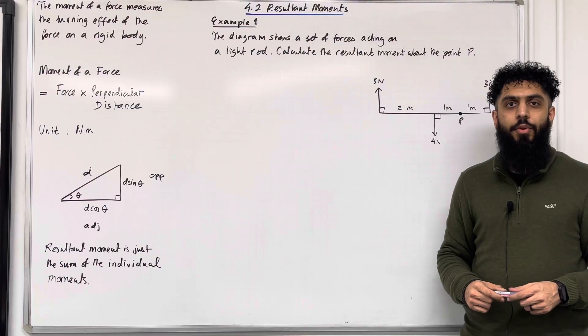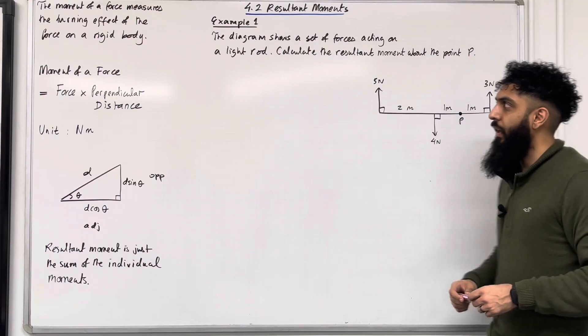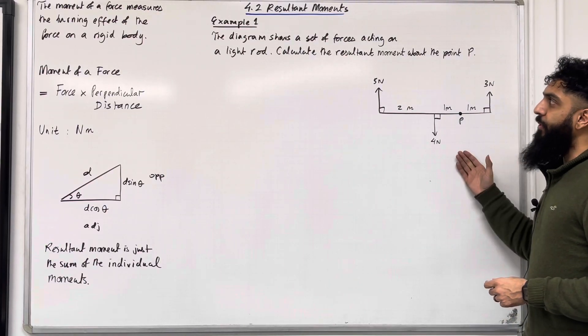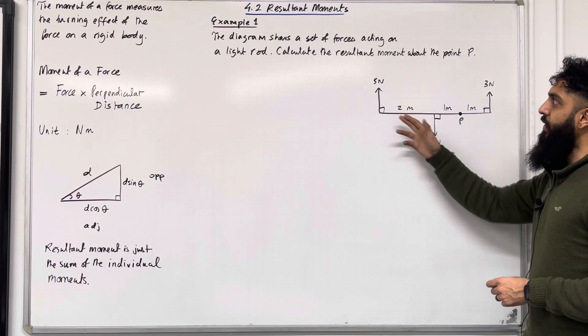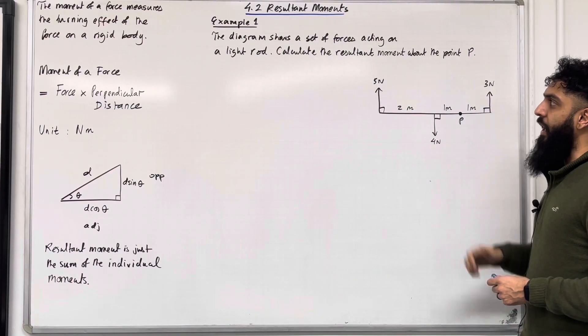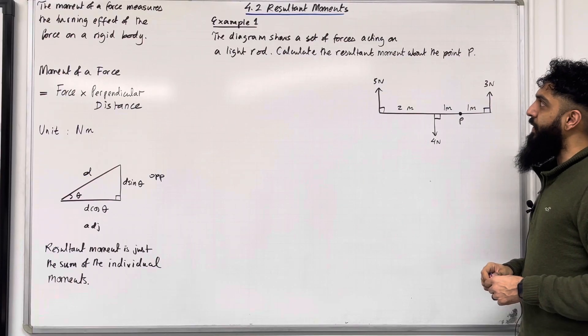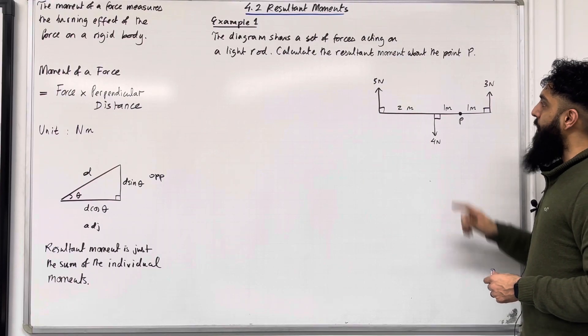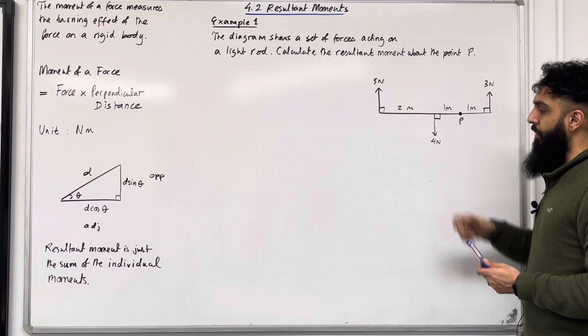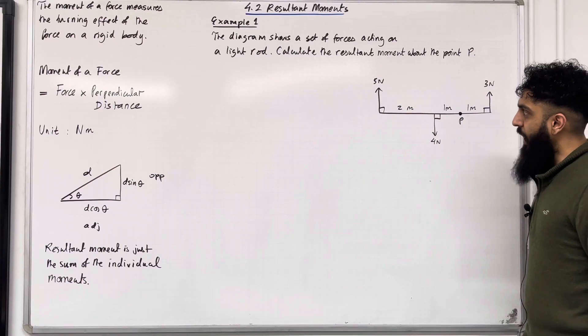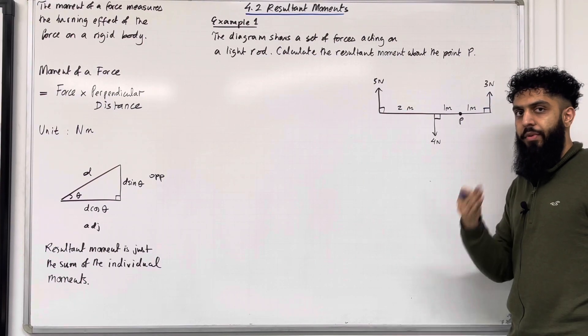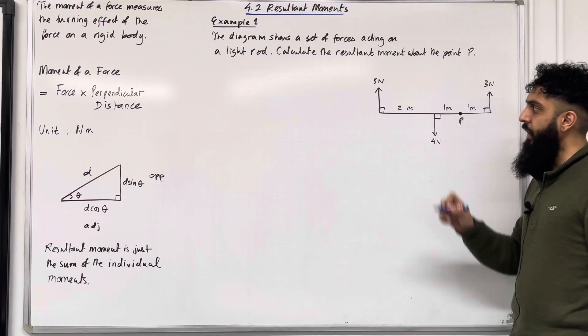Let's have a look at Example 1. The diagram shows a set of forces acting on a light rod. Calculate the resultant moment about the point P. Over here we have three forces.